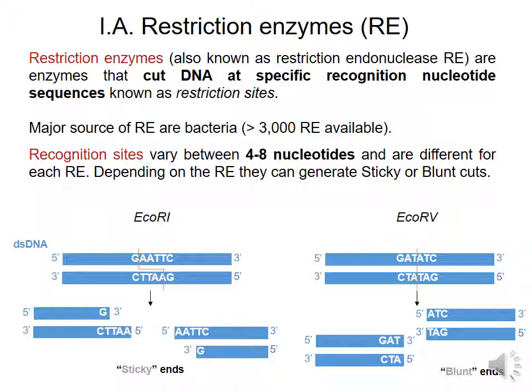Each of these enzymes recognizes a unique recognition site that varies between 4 and 8 nucleotides. And there are two major groups of restriction enzymes.